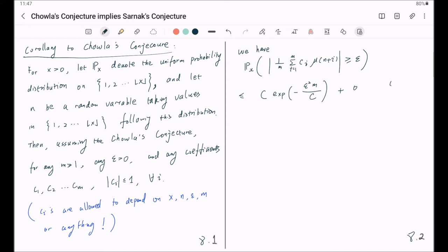plus some error term, some small quantity as x goes to infinity, and there's a dependence on M and epsilon, where C is an absolute constant, and little o is a function of M, epsilon, and x, such that its limit as x goes to infinity